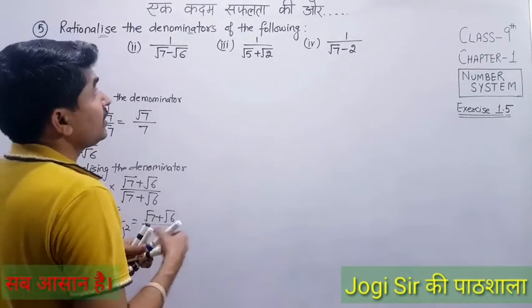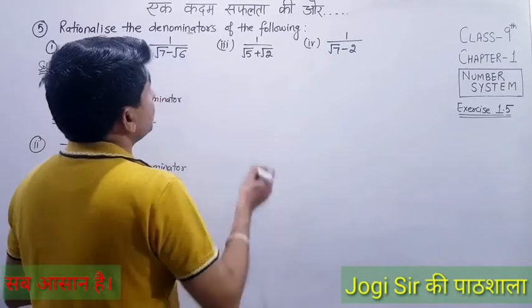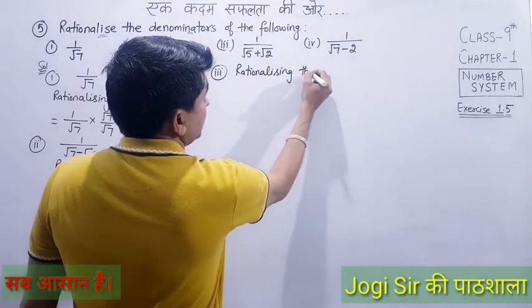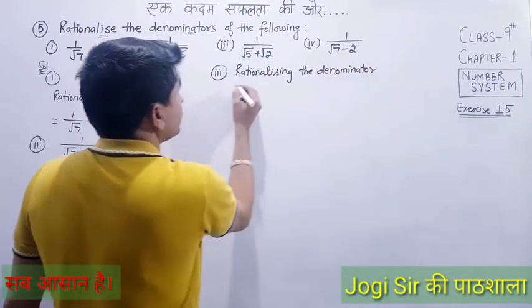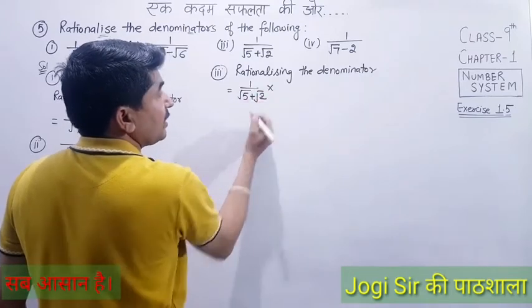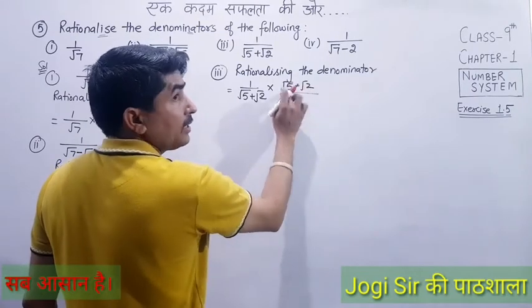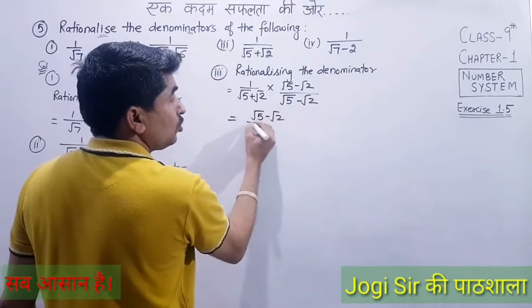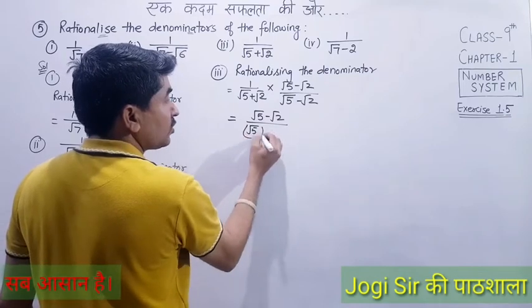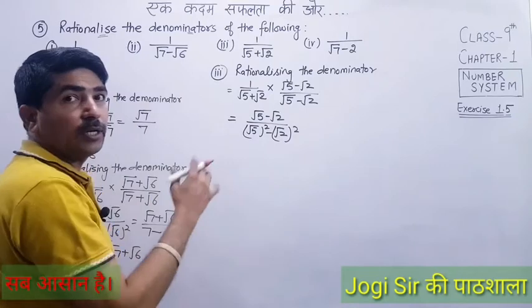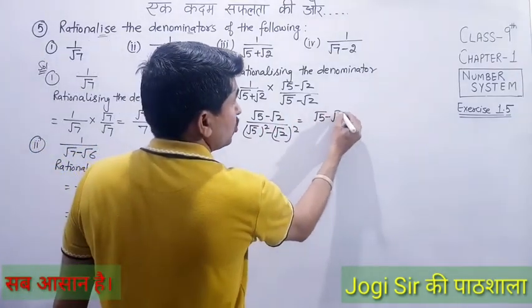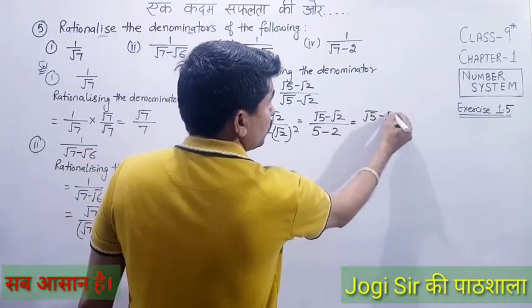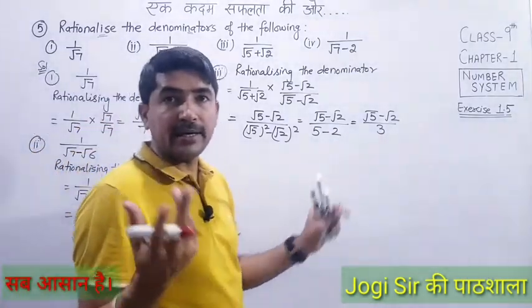Third part: 1/(√5 + √2). Rationalizing the denominator — multiply and divide by (√5 − √2). Using (a+b)(a−b) = a²−b²: numerator becomes √5 − √2, denominator becomes √5² − √2² = 5 − 2 = 3. So the answer is (√5 − √2)/3. The denominator has been rationalized.